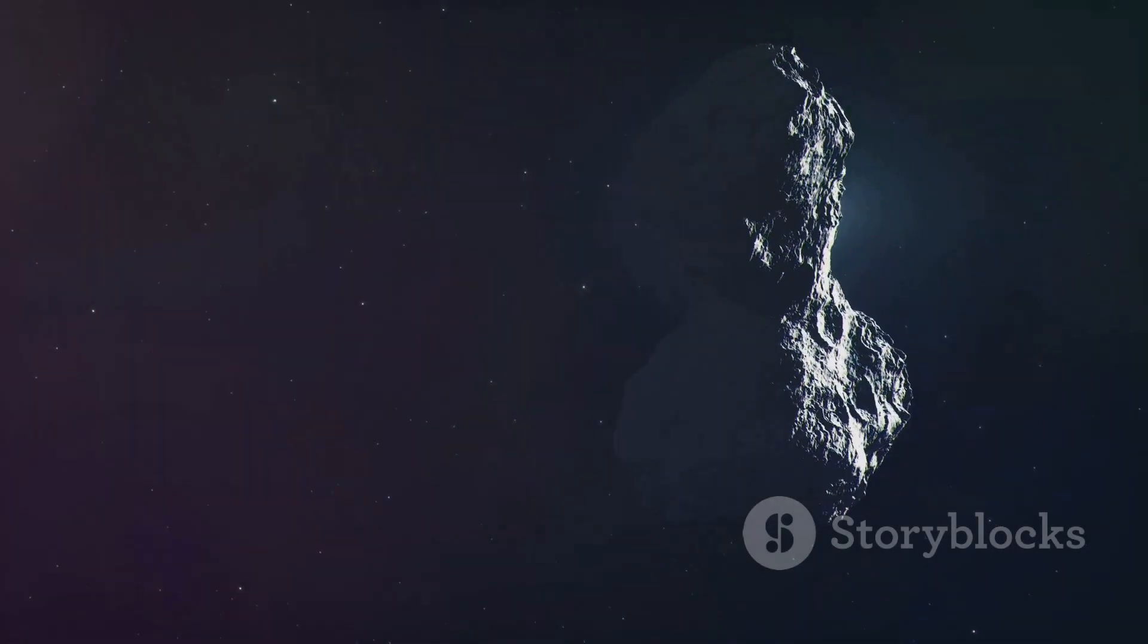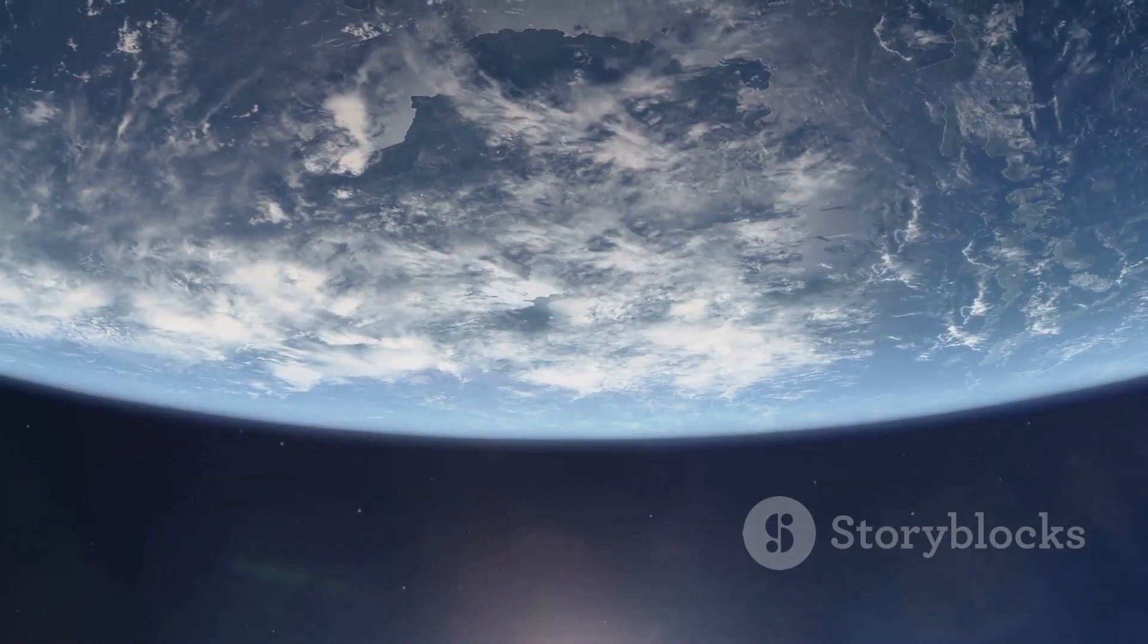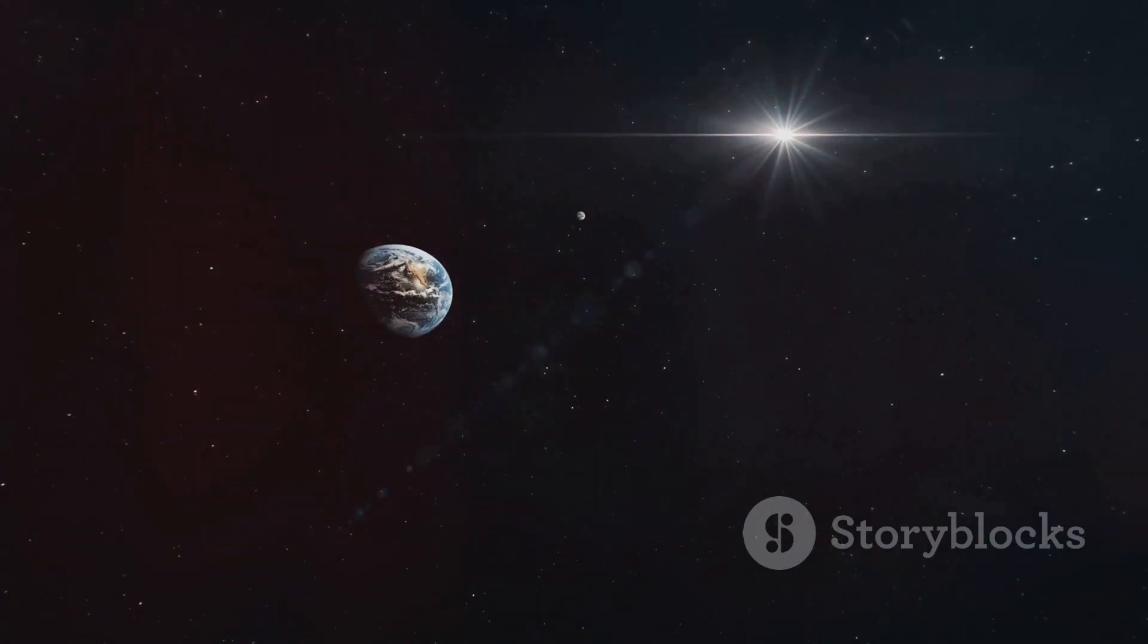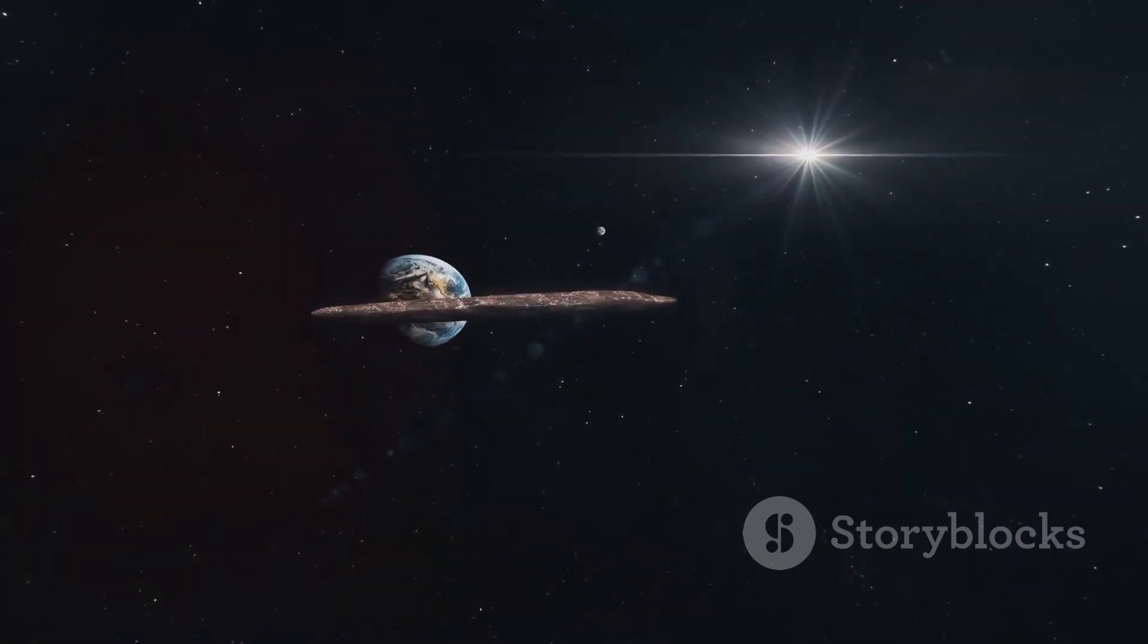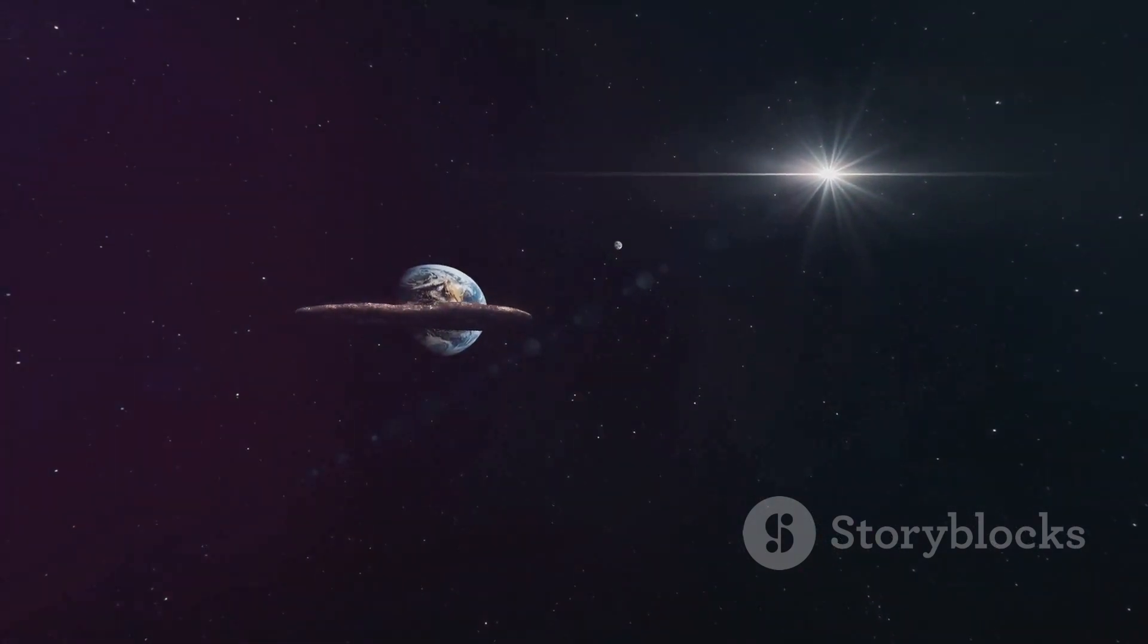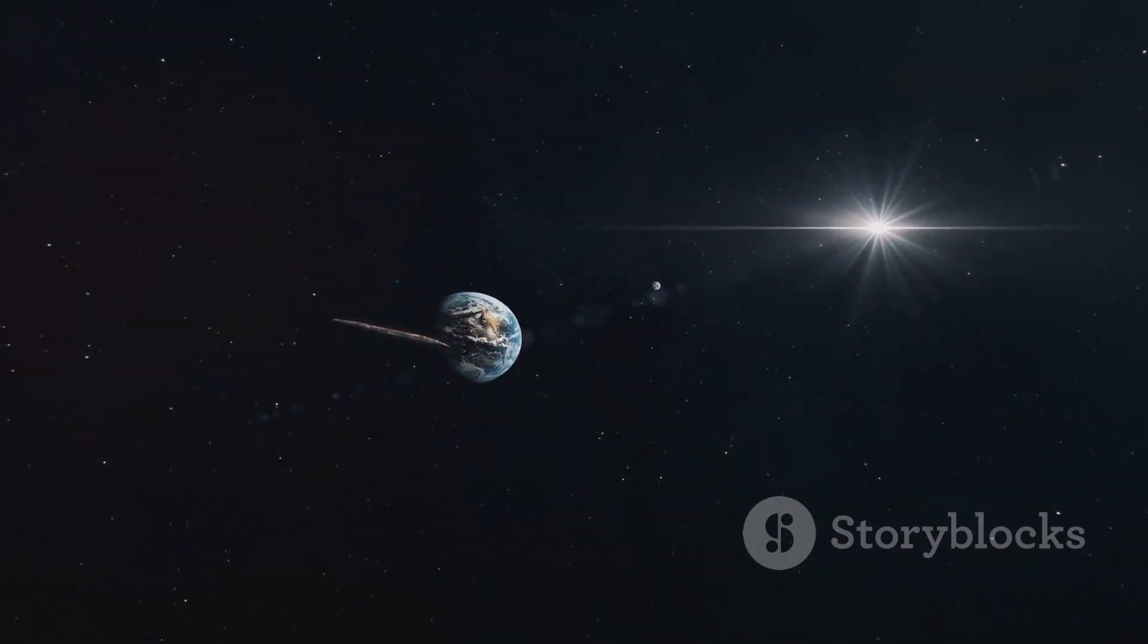Despite its alarming speed, estimated in the tens of thousands of miles per hour, NASA is confident that this asteroid will enter a stable orbit around Earth for 56 days before continuing its journey through the solar system. Its size and speed make it an exciting yet safe event to observe, rather than a threat.